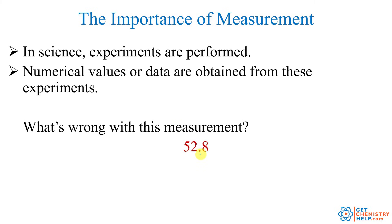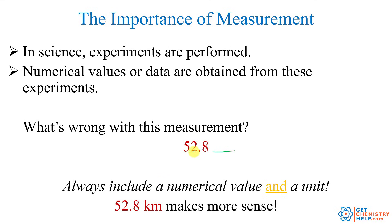For example, maybe you go in a lab, you do an experiment, and you write down 52.8 as your data or your measurement. Well, what's wrong with this measurement? 52.8 what? We need some kind of a unit. So if you were to say 52.8 kilometers or 52.8 degrees Fahrenheit or hours or minutes, that would make a lot more sense. Whenever you record a measurement in science, you always have to record both the number and a unit.